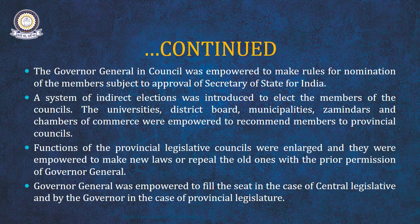Unlike the Act of 1861, a system of indirect election was introduced to elect the members of the Council. Universities, District Boards, Municipalities, Zamindars, and Chambers of Commerce were empowered to recommend members to the Provincial Councils. This system was not present in the Act of 1861, and this provision of indirect election is one of the most important and noteworthy features of this particular Act.